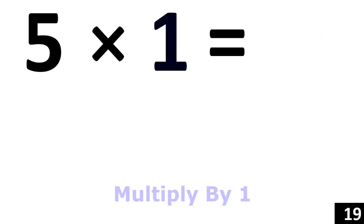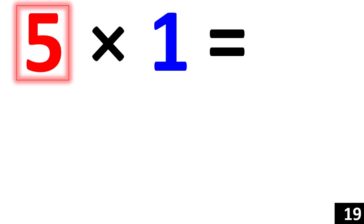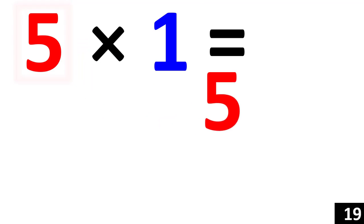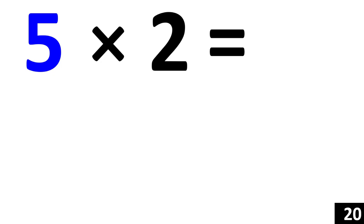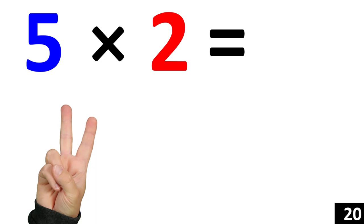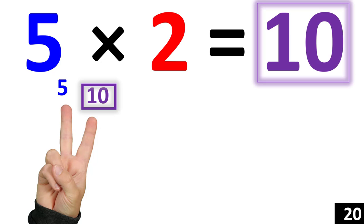For 5 times 1, we just use the rule of 1. Any number times 1 is that number. So 5 times 1 is equal to 5. 5 times 2 is the same thing as counting by 5 two times. 5. 10. So we see that 5 times 2 is equal to 10.